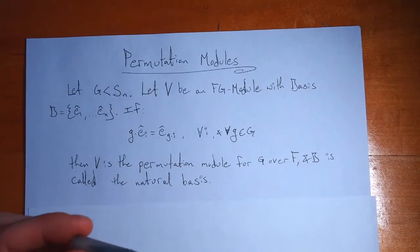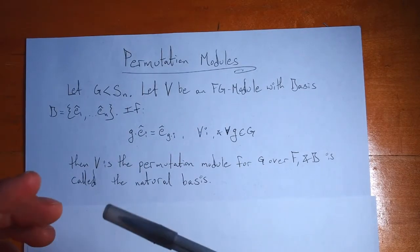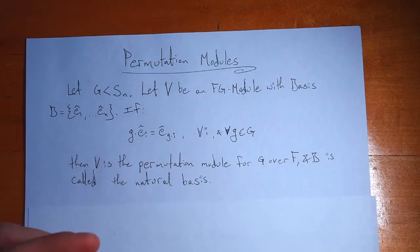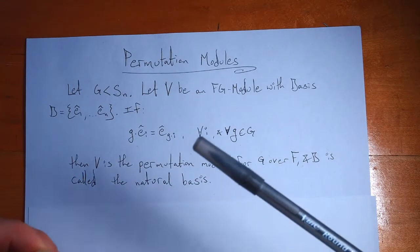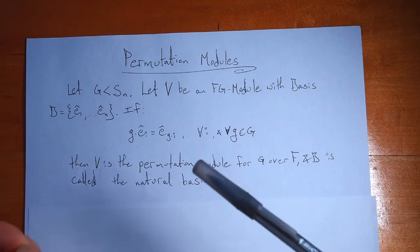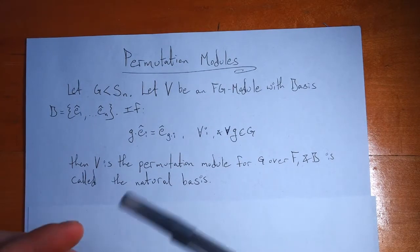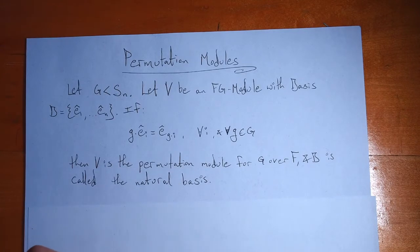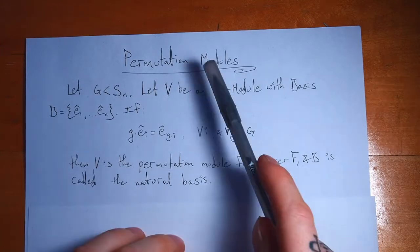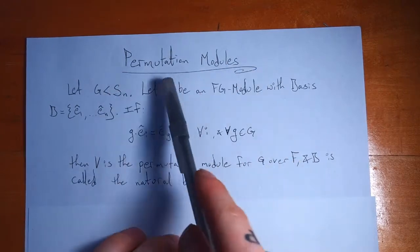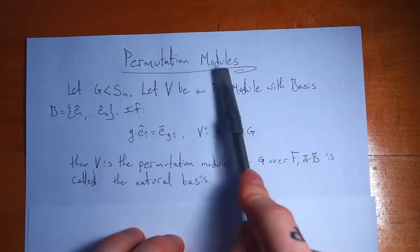We've seen a bunch of examples of representations. We've let them act on vector spaces to get FG modules, and we've looked at some properties that you can check for your representation. But we haven't talked a whole lot about constructing representations, except for the case of cyclic groups. So today I'd like to look at another method for constructing representations of groups using a specific kind of FG module called permutation modules.